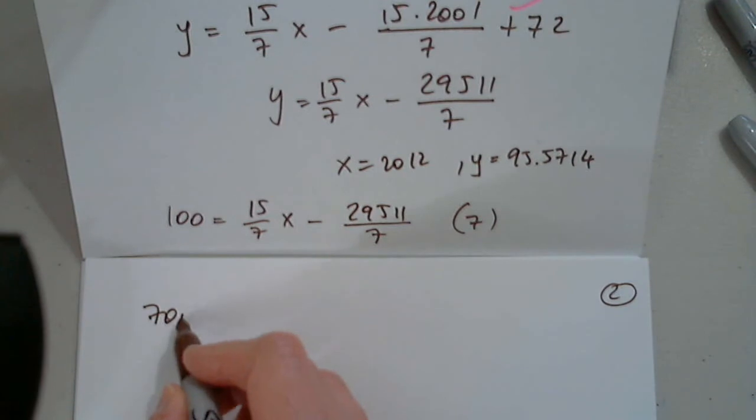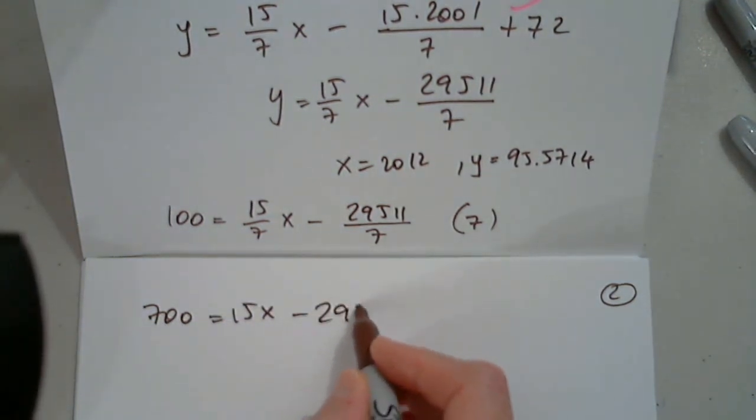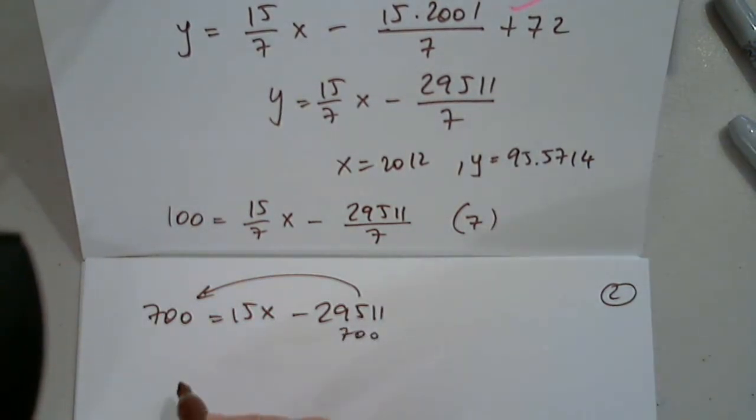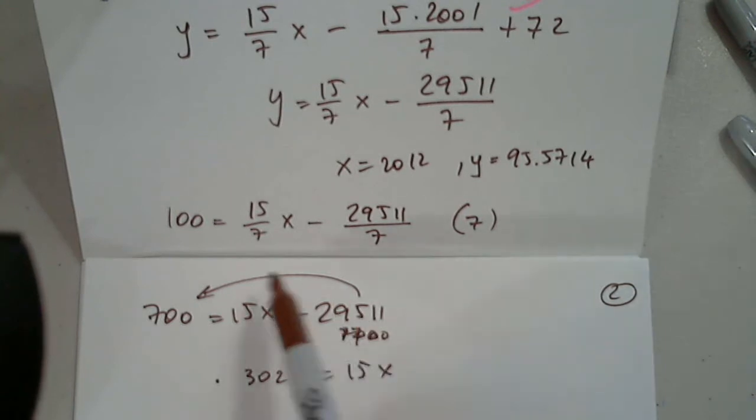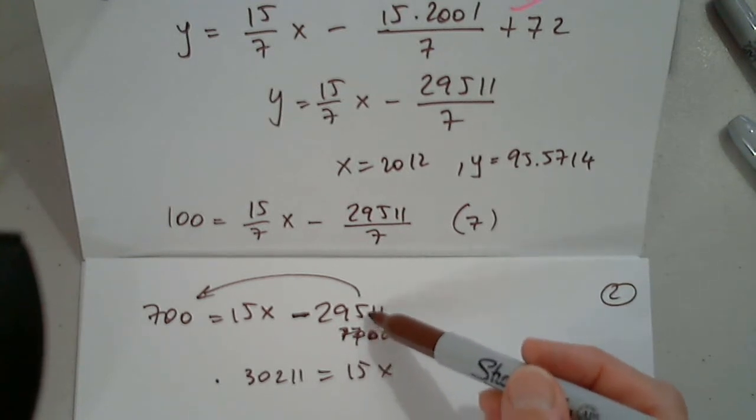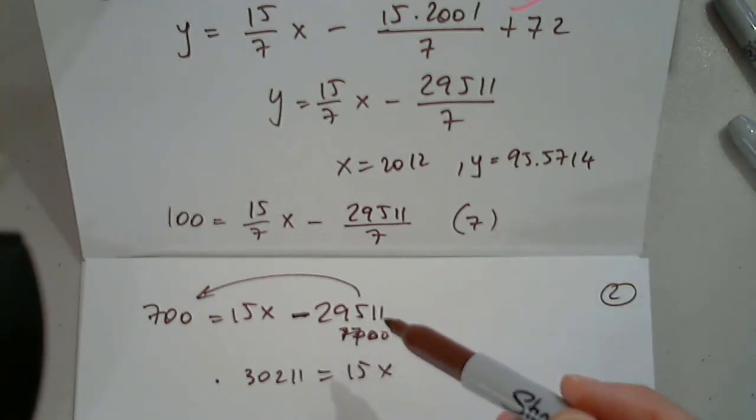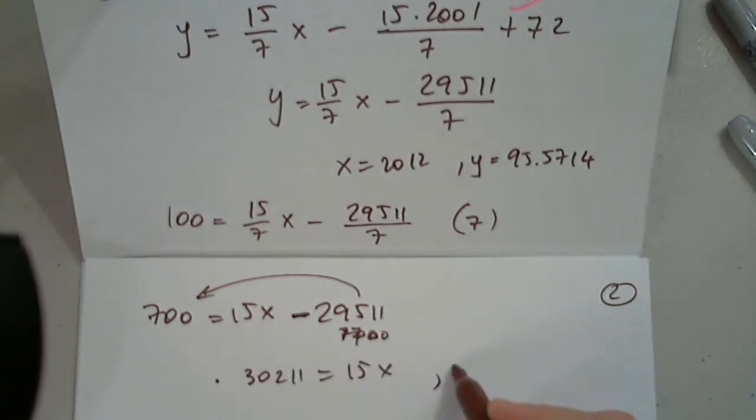So I have 700 equals 15x minus 29511. I'll move this to the other side, and when I add 700... So I get, so this is 2 and 1, so 30, yes, 30211 equals 15x. So 29511, when I move it to the other side, it was negative. I move it to the other side, it becomes positive. So when I add 700 to this, I'm checking again, 11, yes, 2 and 130, correct. So then x equals 30211 divided by 15.